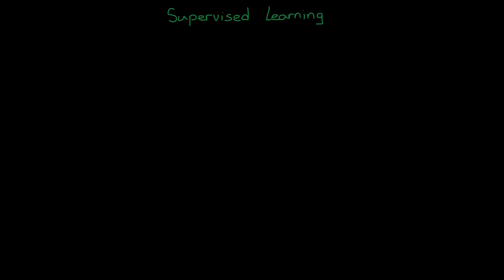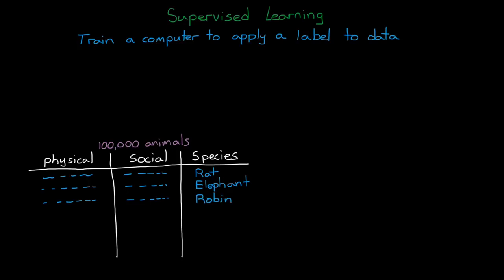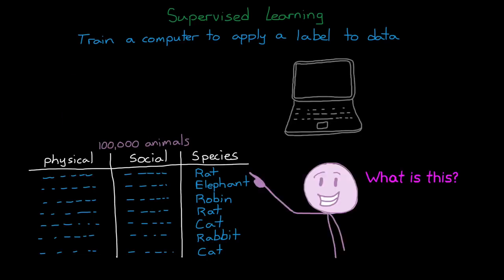Supervised learning, on the other hand, is different in a subtle way, in that we train the computer to apply a label to a given input. For example, let's say that one of the columns of our data set of animal features is the species. We can then treat species as the label, and the rest of the data as inputs into a mathematical model. Then we can use supervised learning to train our model to correctly label each set of animal features by inputting them in one at a time,